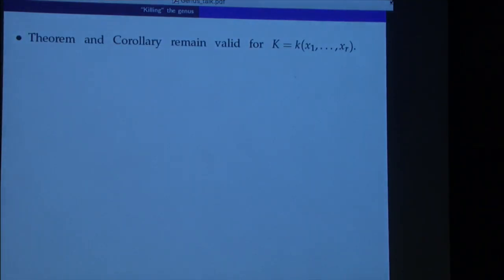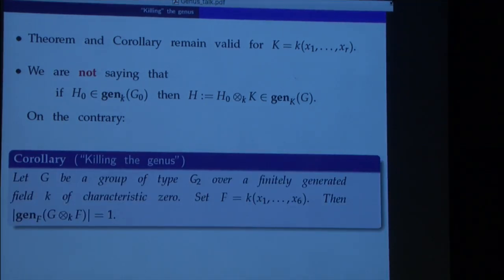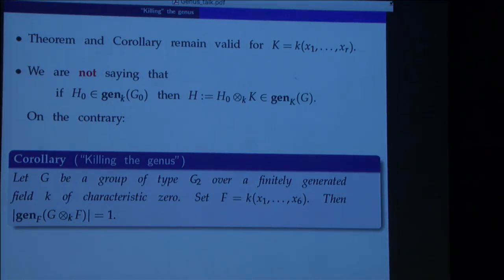Iterating, you get this not only for one variable but for several variables. However, I am not saying that whenever you have something in the genus over the base field, it will remain in the genus after the field extension. On the contrary, the following killing theorem holds: if we have a group of type G2 over a finitely generated field, and we do the base change to a purely transcendental extension in 6 variables, the genus gets completely killed — the genus over that purely transcendental extension becomes trivial.